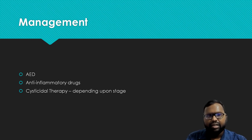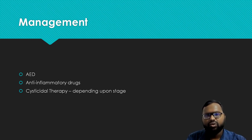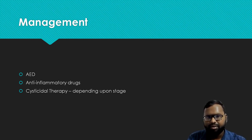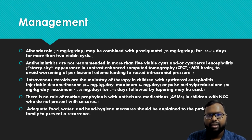Next, we have cysticidal therapy. Before starting this, we have to rule out tuberculosis — we need to do a chest X-ray. What cysticidal therapies are available? Depending upon the stage: if there is a calcified lesion, you do not have to give any cysticidal therapy. If there is an active lesion — vesicular, colloidal, or granulonodular — you have to give albendazole 15 mg per kg per day in combination with praziquantel for 7 to 14 days. If there are more than two viable cysts, give albendazole along with praziquantel for 10 to 14 days.